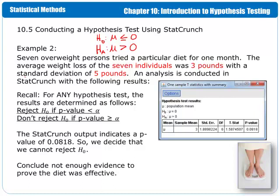You notice that there is no mention of the number zero in the statement, but you know that zero is what we should use, because if no weight is lost, then that's the equivalent of zero pounds being lost. The average weight loss of the seven individuals was three pounds, so we know our sample mean is equal to three. The standard deviation is five pounds, so our sample standard deviation is five. The sample size is seven people, so n is equal to seven.